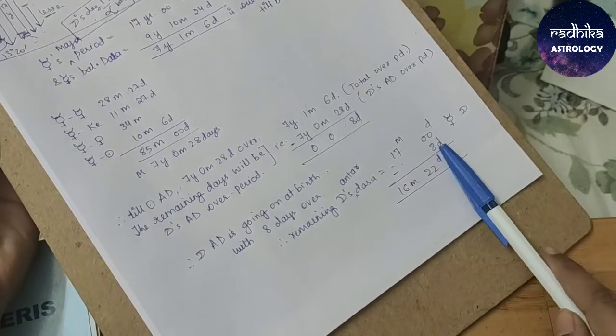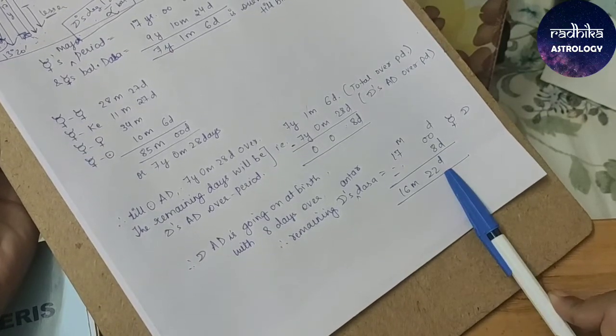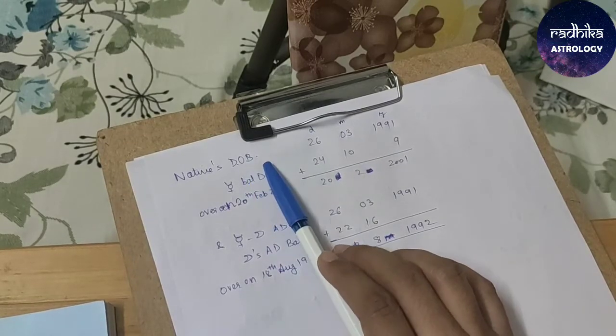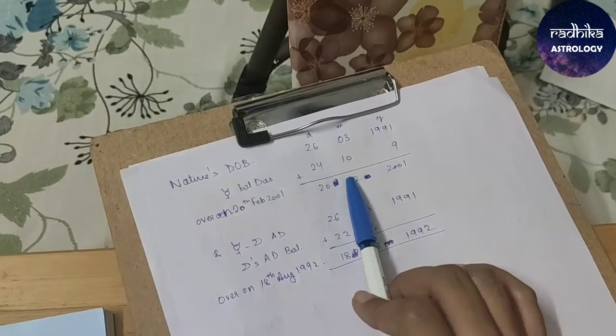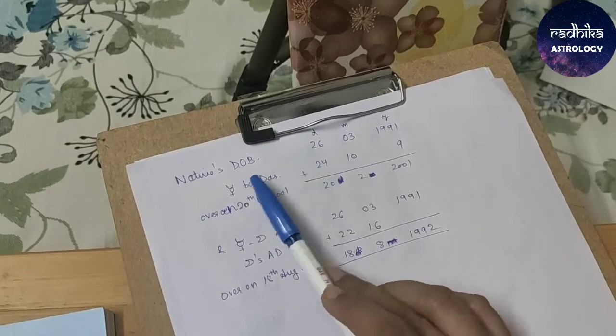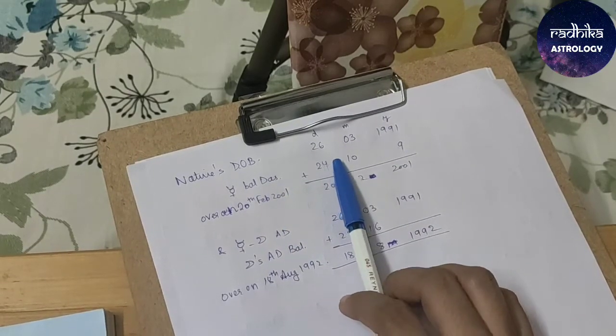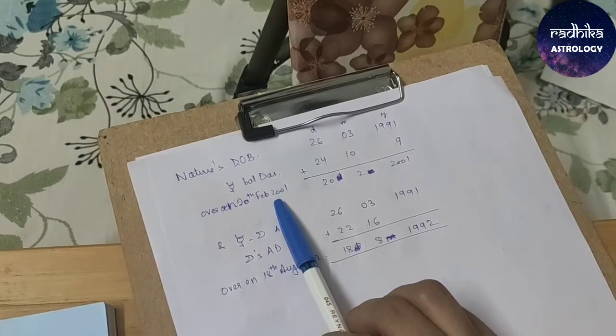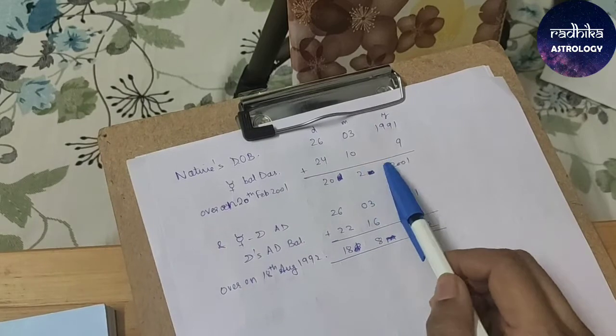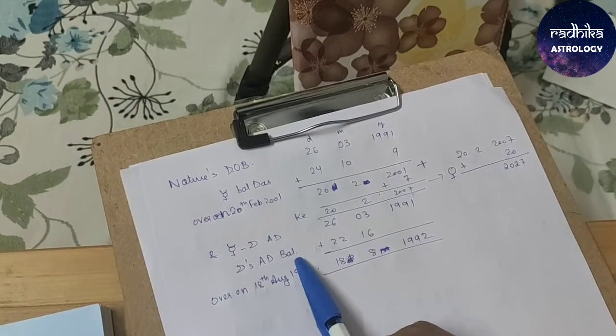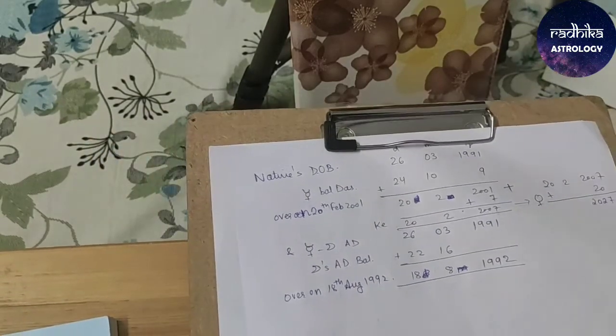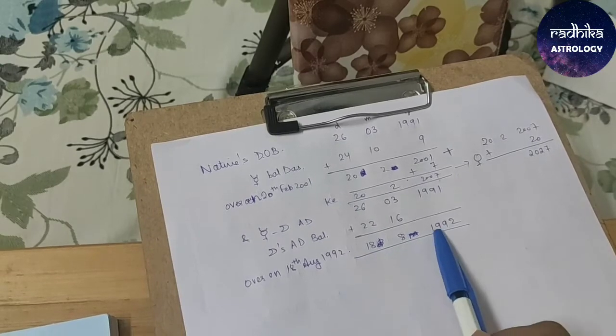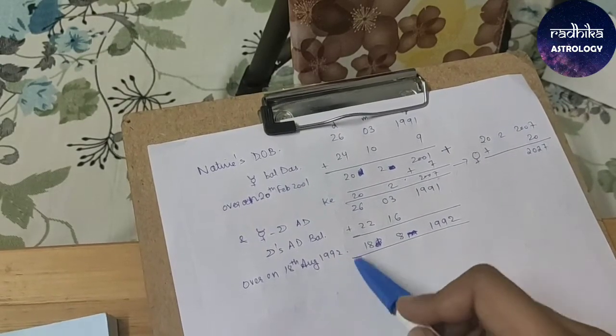Remaining Moon's Antardasha: Mercury has given Moon 17 months 0 days. Subtract 8 days because 8 days were over. You will get 16 months 22 days. Before the birth of this person Moon already covered 8 days. This much is yet to be covered by Moon. We just have to add this value to the major period lord Dasha during his birth. Mercury balance Dasha we found was 9 years 10 months 24 days. Add the balance of Moon's Antardasha which is 16 months and 22 days. You will get 18th August 1992. That means on 18 August 1992 Moon Antardasha of Mercury will be over.